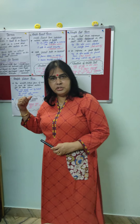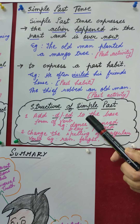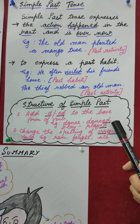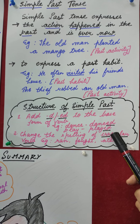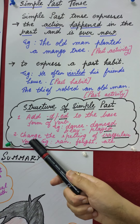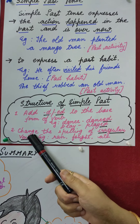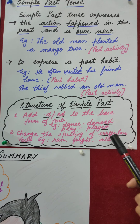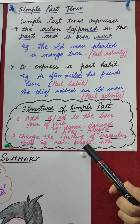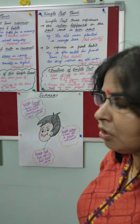The structure of simple past tense: add D or ED to the base form of the verb. For example, 'dance' becomes 'danced,' and 'play' becomes 'played.' The second rule is to change the spelling — sometimes we have to change the spellings of irregular verbs. For example, 'run' becomes 'ran,' 'fight' becomes 'fought,' and 'eat' becomes 'ate.' I hope simple past tense is clear to you children.